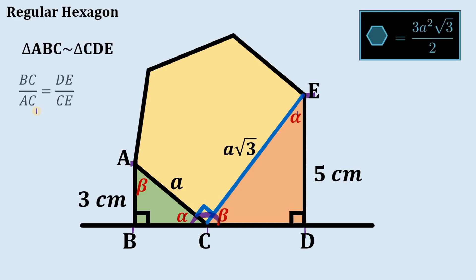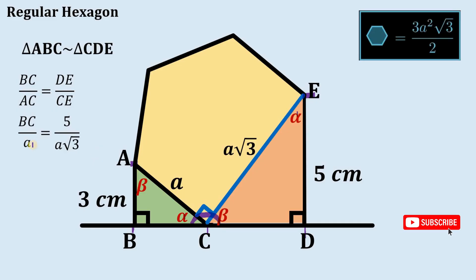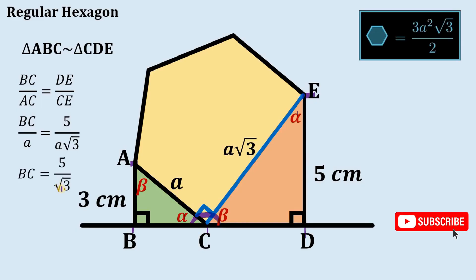Since they are similar, the ratio of side BC to AC equals the ratio of side DE over CE. We know that AC equals a, DE equals 5, and CE equals a times square root of 3. When we cross multiply, we get that side DC equals 5 over square root of 3.